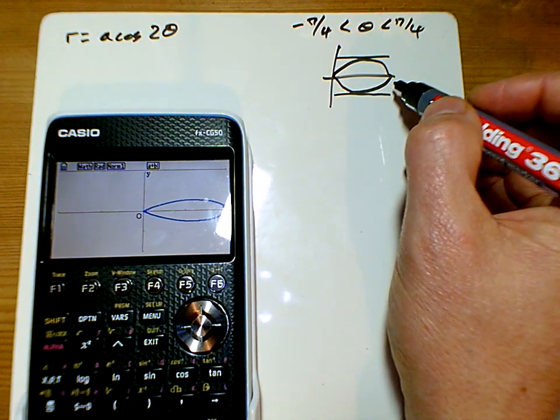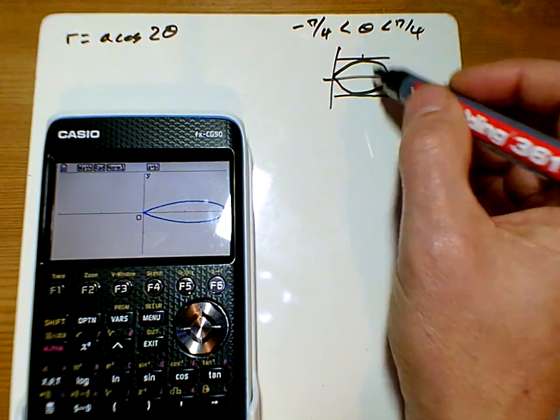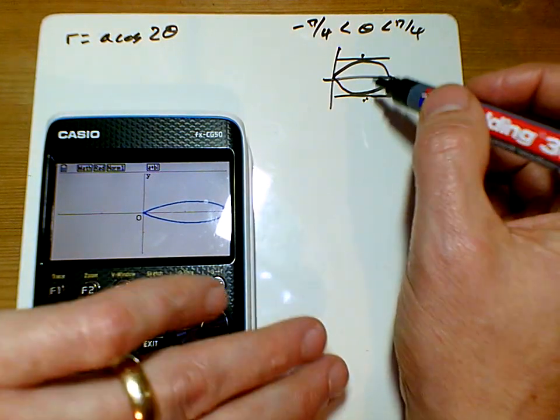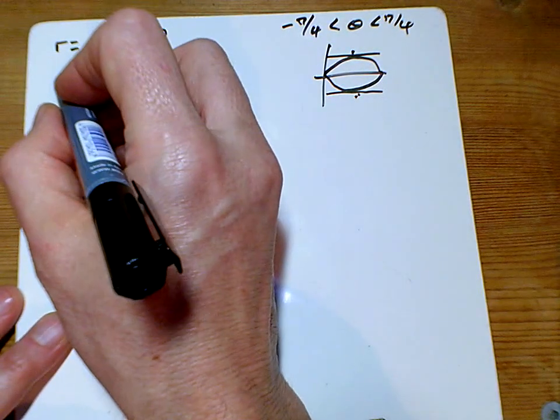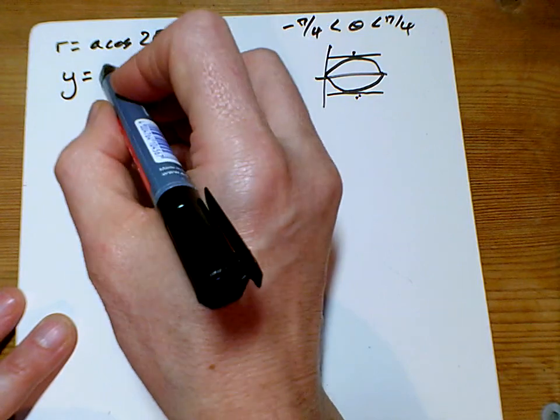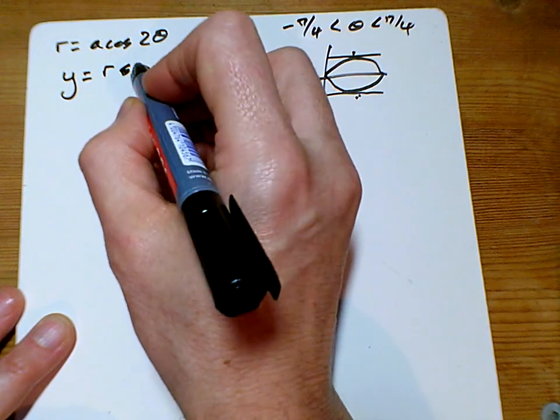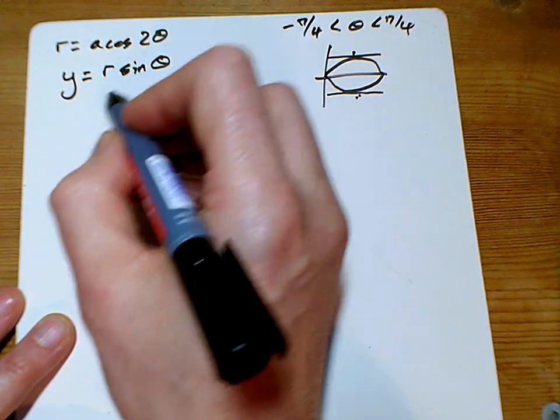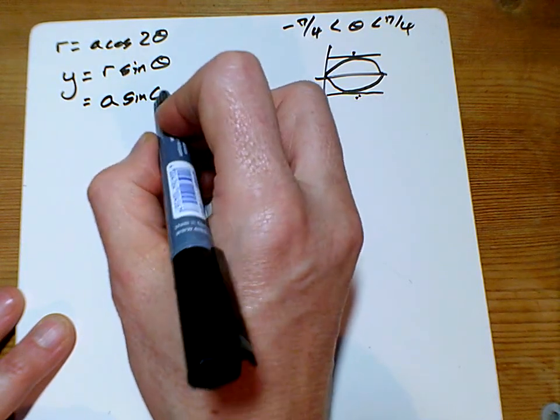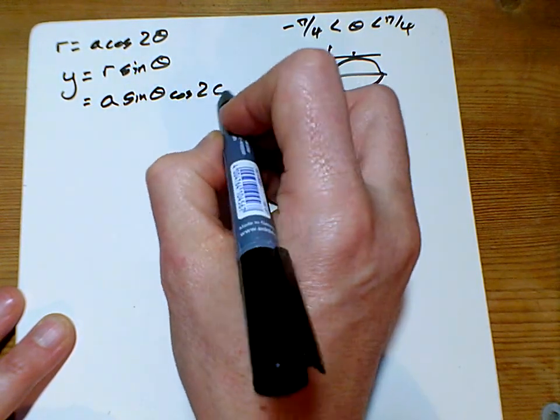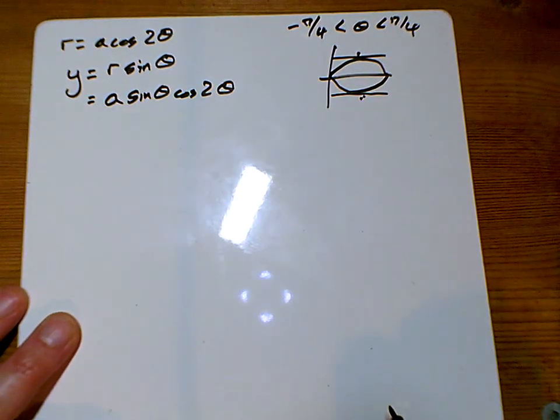So just checking, it is parallel, yeah, so parallel to the initial line. So we're looking for those ones there and there. They're going to be symmetrical. So if it's parallel to the initial line, we're looking for the y one, and y equals r sin θ. So we're looking for a sin θ cos 2θ, and that's what y is equal to.